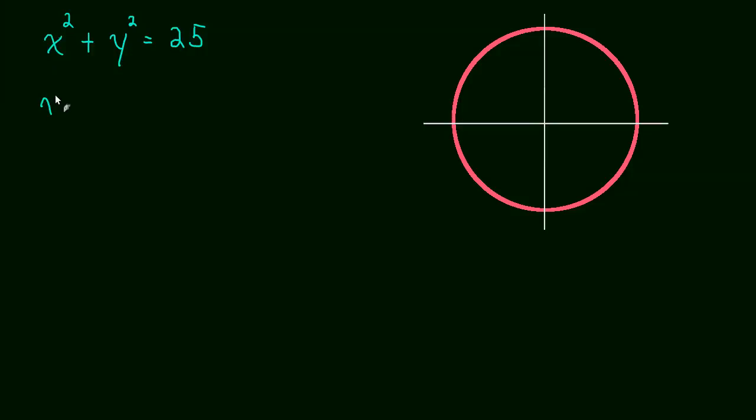So one thing that we could do to take this derivative is we could actually solve for y. And we would get y equals plus or minus the square root of 25 minus x squared. And then we could just take this derivative. We'd have two values, actually. y would be both plus and minus, depending on what x is.